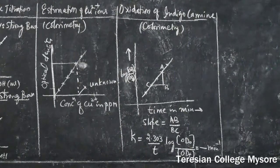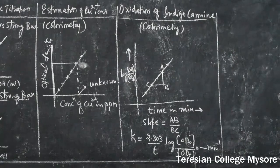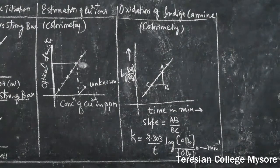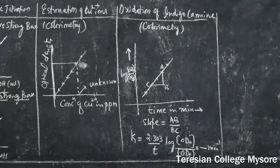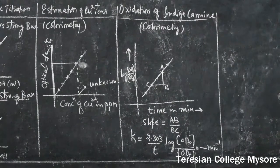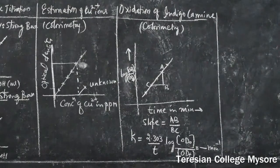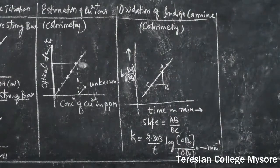Once you get a straight line passing through the origin, it verifies Beer-Lambert's law. From the optical density obtained for the unknown solution — which will be given by the examiner — find out the optical density of the unknown, tabulate it on the graph, and find out the concentration of the unknown. That carries 10 maximum marks. This is how you estimate copper ions using ammonia ligand by colorimetric method.